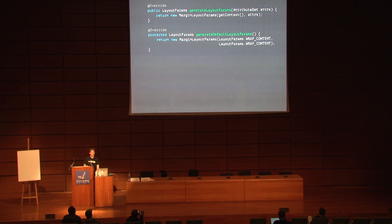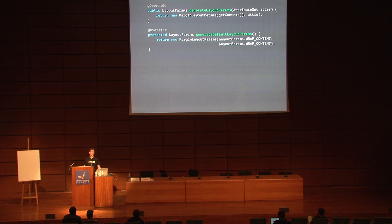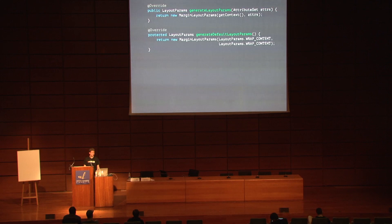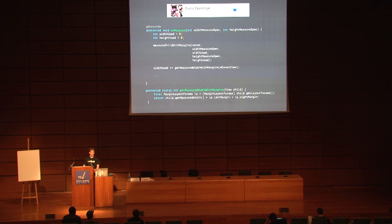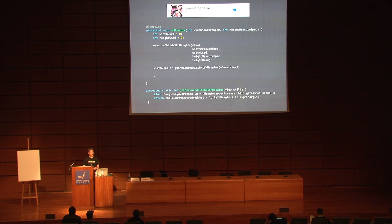In order to write a ViewGroup, I also need to declare which layout params to use. In almost all cases, you want to use MarginLayoutParams because you want to be able to apply margins to your children. You just need to declare it in these two methods — the first one is called each time you inflate a view in XML, and the second one is called when you create a view directly by the constructor, supplying default layout params in that case.